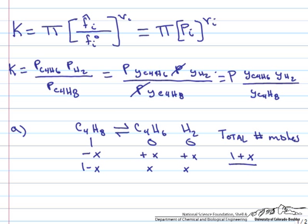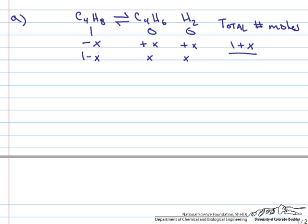So now we can go and set up the concentrations at equilibrium for each of the species. So Y of C4H8 will just be the equilibrium concentration, so 1 minus X divided by the total number of moles, 1 plus X. So Y of C4H6 will be equal to X over 1 plus X. Again, equilibrium concentration over the total number of moles. And same thing for H2, X over 1 plus X.